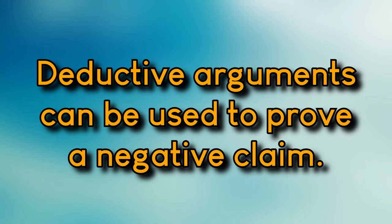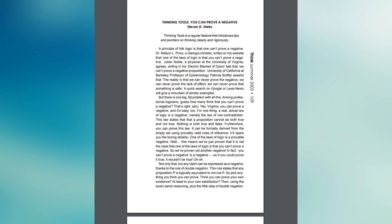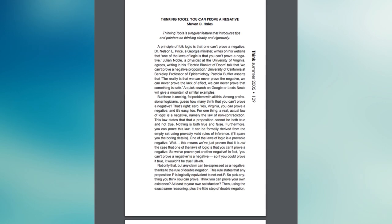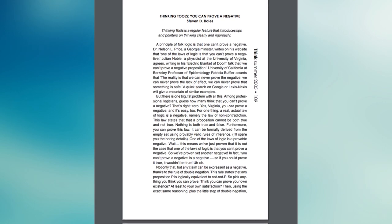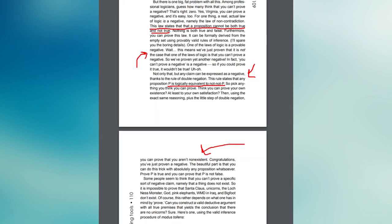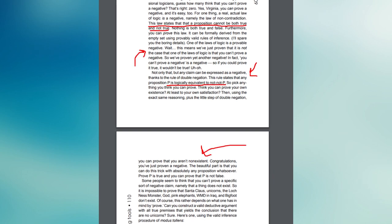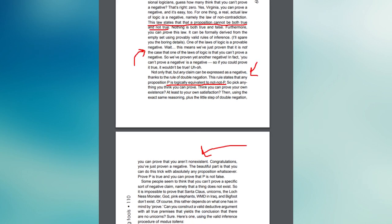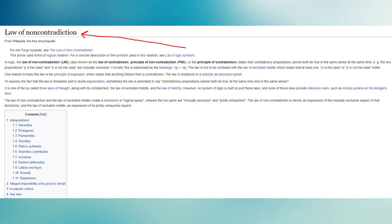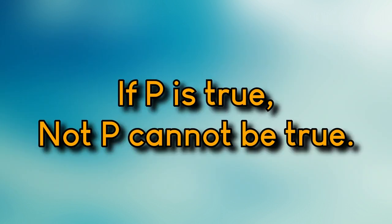Deductive arguments that yield deductively true conclusions can be used to prove a negative, because — as in Stephen D. Hale's paper 'You Can Prove a Negative' — proving the positive of something directly proves that the opposite of that claim cannot be true, due to the law of non-contradiction. In other words, if P is true, not-P cannot be true as well.